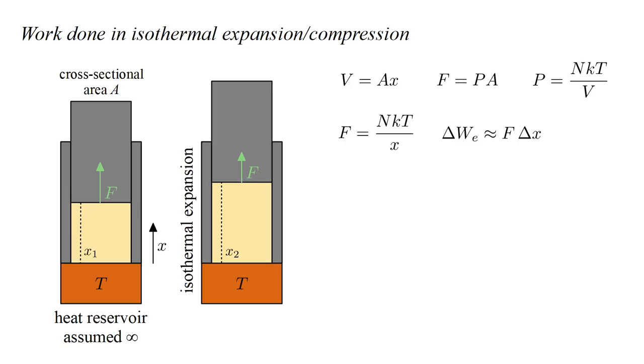When the piston moves a distance delta X, the work done is approximately F times delta X. Approximately, because the force changes with X. If delta X is very small, this change is very small. If the piston travels a large distance from X1 to X2, we have the process illustrated in this graph.